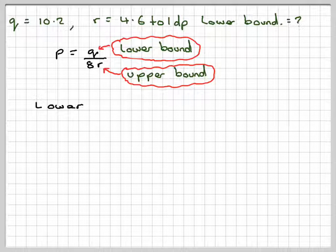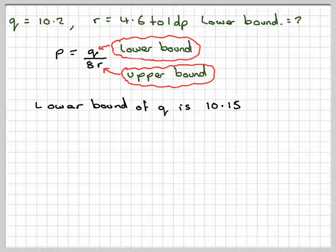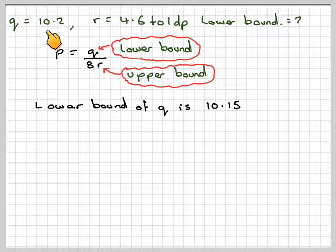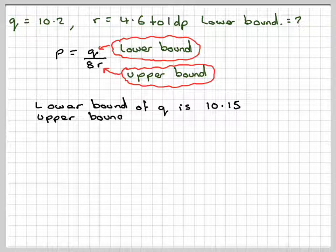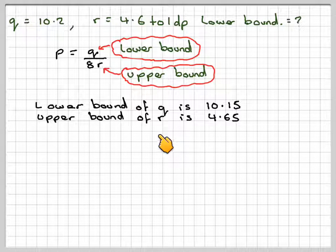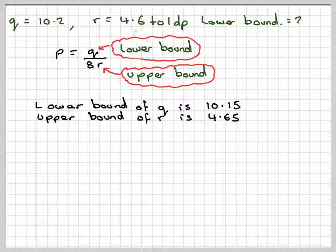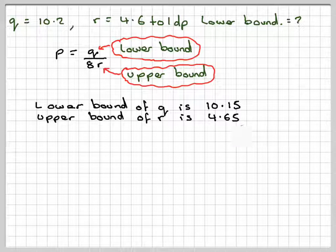The lower bound of Q is 10.15 if that's been rounded to 1 decimal place, and the upper bound of R is 4.65.